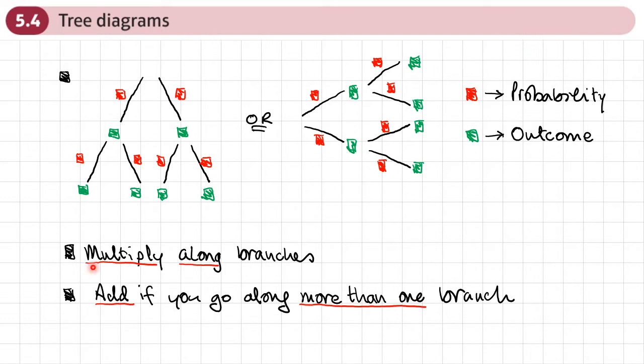And the rules for tree diagrams are if you go along a branch, then you multiply those probabilities. So you multiply along branches. If you go along more than one branch, then you're going to add them together.